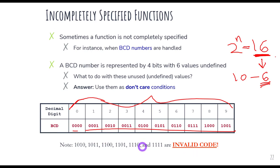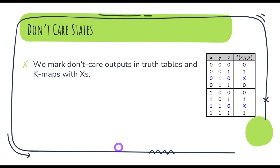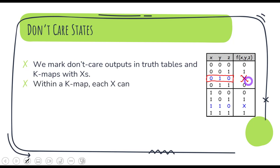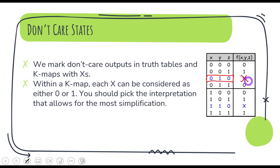Since we do not use these six combinations in BCD, we can use them as don't care states. One more thing before going to the K-map: we mark these don't care conditions with a cross in our truth tables, and we can consider them as either a zero or a one in the K-map when making groups — whichever combination gives us the most simplified form.